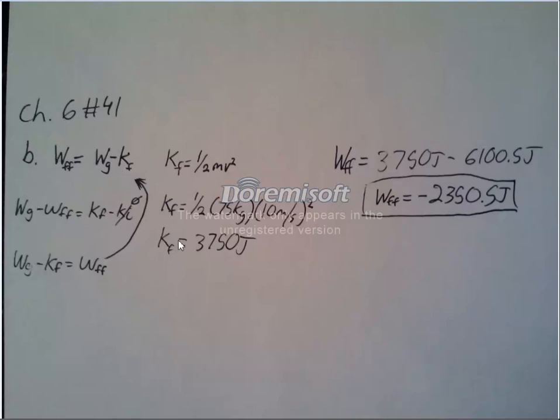The work done by the friction force is equal to the difference between the work done by gravity and the work done by kinetic energy, right here. We know K of I would be 0, so we could solve this equation right here. Kinetic energy, we know kinetic K equals one-half mv squared. We could plug in and solve for the kinetic energy. You're given velocity 10 meters per second. So once we have that, we just take this, plug it into our equation right here, and we get negative 2,350.5 joules.